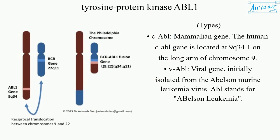Types. cABL — Mammalian Gene: The human cABL gene is located at 9q34.1 on the long arm of chromosome 9. vABL — Viral gene, initially isolated from the Abelson Murine Leukemia Virus. ABL stands for Abelson Leukemia.